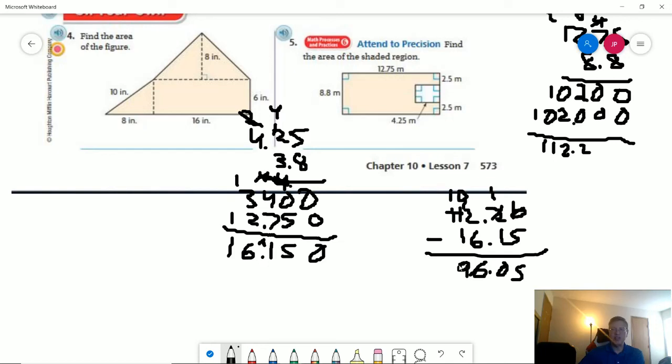So that would give us 96.05 for the area of the shaded portion here. So, hopefully that helps. This is a little bit trickier of a lesson, so it's understandable. If there are any questions,